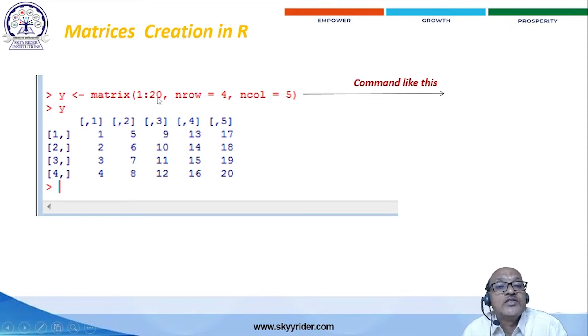And 1 to 20, that means from starting letter 1 to 20 letters. The number of rows is equal to 4, number of columns is equal to 5. That means you have to define how many columns are required, how many rows are required. I want number of rows equal to 4 and number of columns are 5. Number of rows, like this, 4 rows and 5 columns.